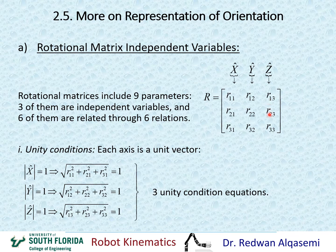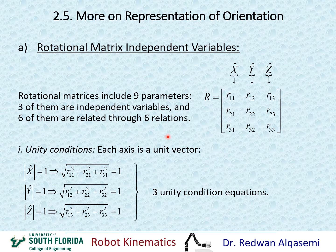For the Z axis, take the third column elements, square them, add them, and take the square root — that should also equal one. These three relationships represent the three unity conditions we use to get relationships between the nine elements in relation to the three independent variables.